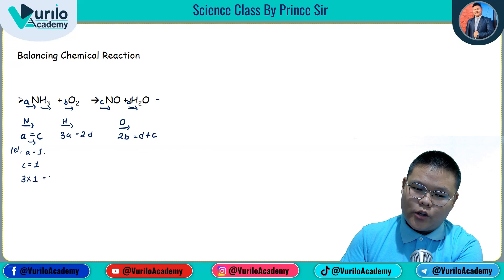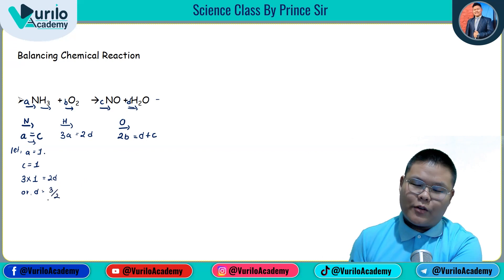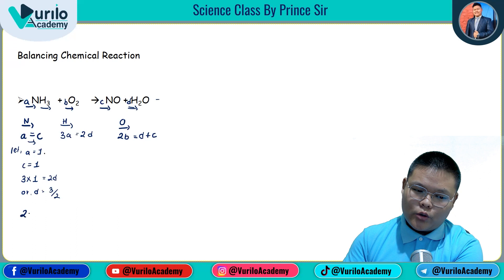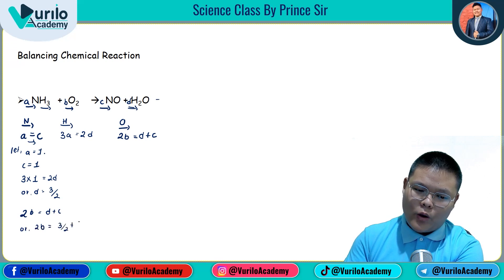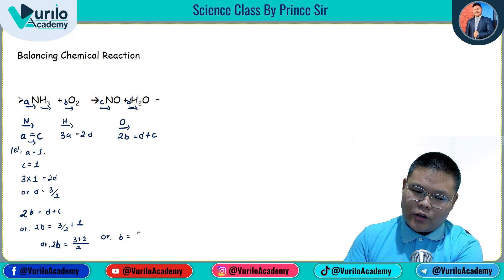So I am going to say c is equal to 1. In the same way, putting this value: 3 into 1 is equal to 2d, and d is equal to 3/2. Then 3 divided by 2, and what do I have to do: I have to solve 2b is equal to d plus c.